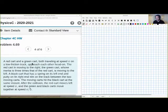We've got a red cart and a green cart, both traveling at speed v on a low friction track. They're approaching each other head-on, so we've got red and green coming towards each other at the same speeds. The red cart is moving to the right, the green cart, whose inertia is three times that of the red cart, is moving to the left. Okay, this is already getting pretty complicated.